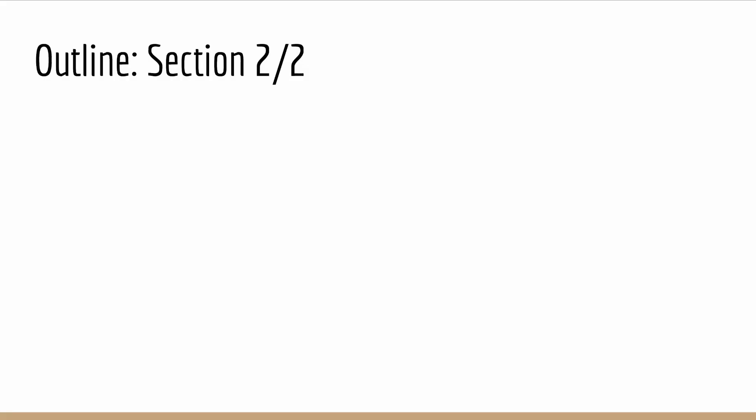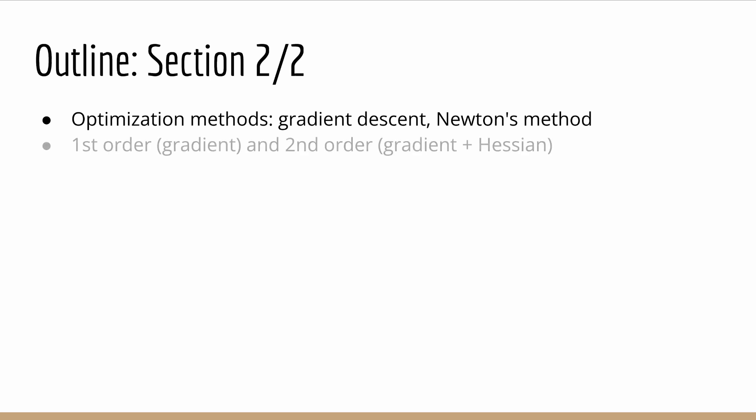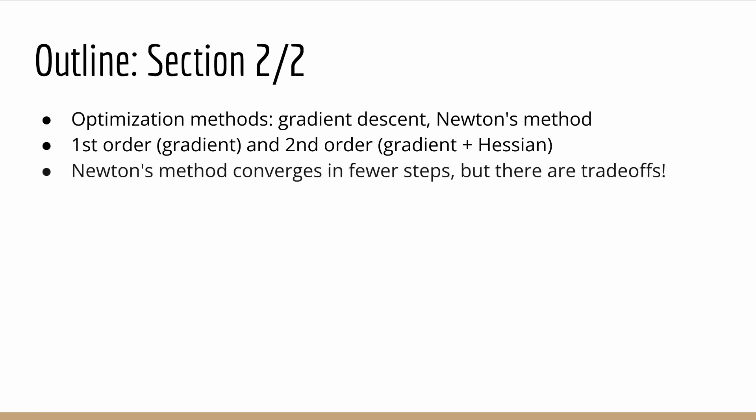The second section focuses on simple optimization methods common in data science and machine learning, including gradient descent and Newton's method. Gradient descent is what is known as a first-order method, while Newton's method is a second-order method. Newton's method allows us to converge in many fewer steps, but it comes with some trade-offs as you will see.